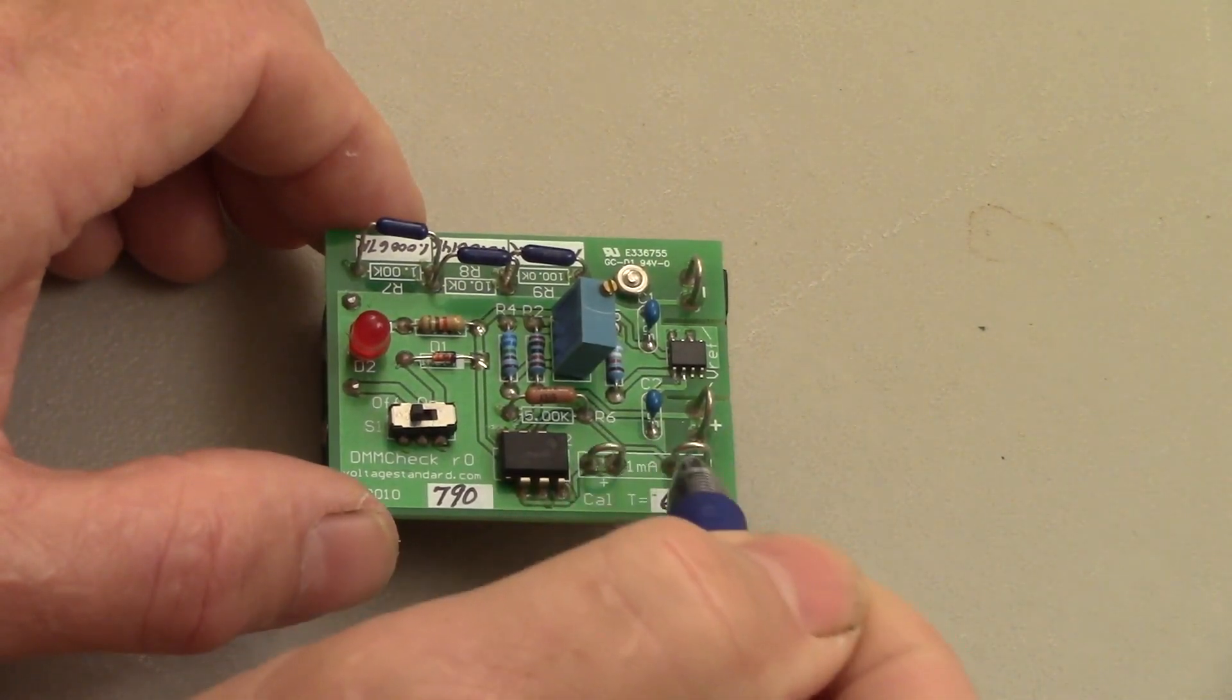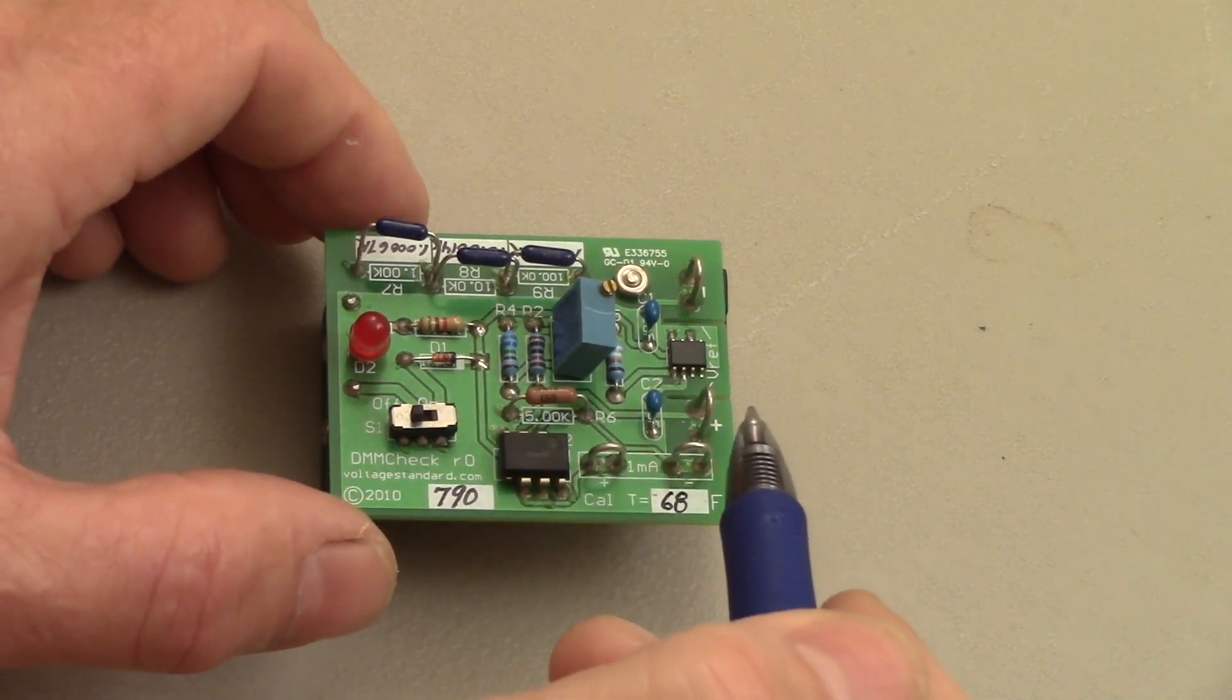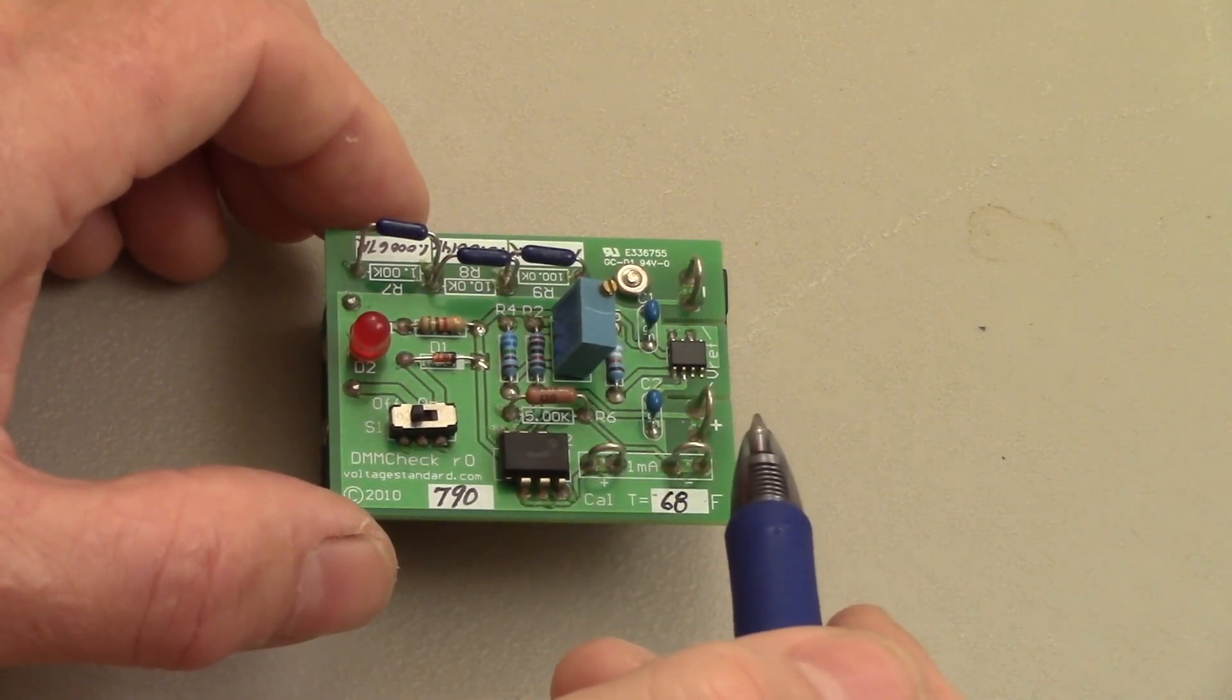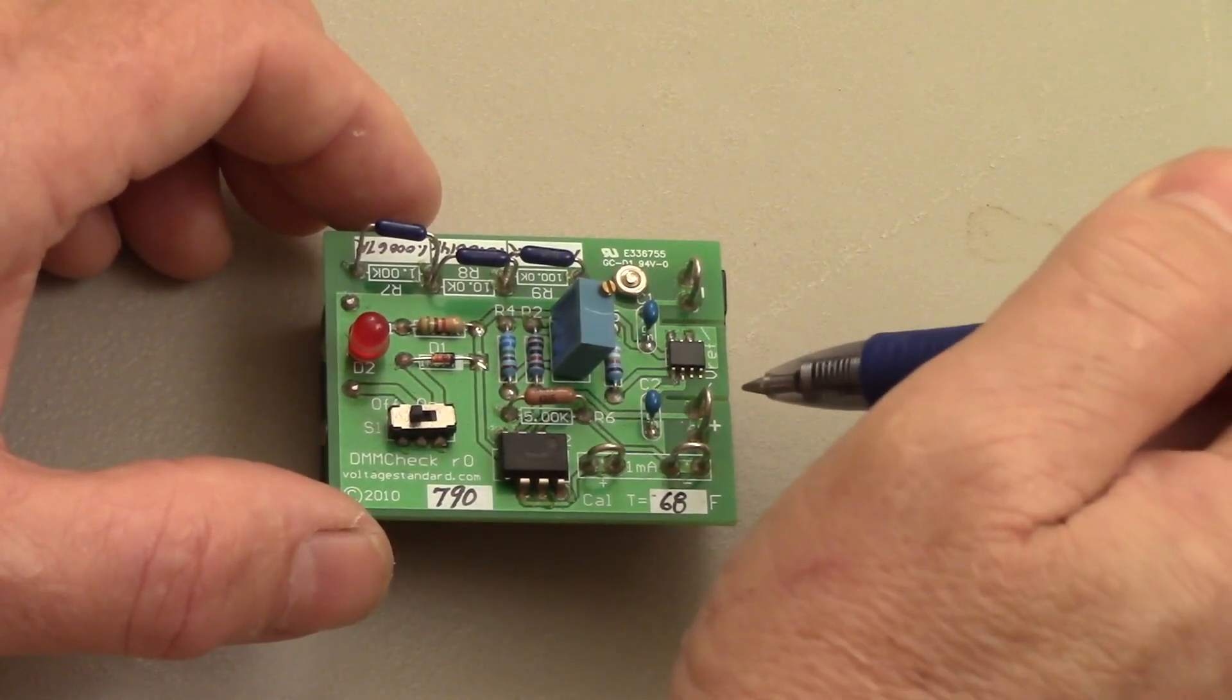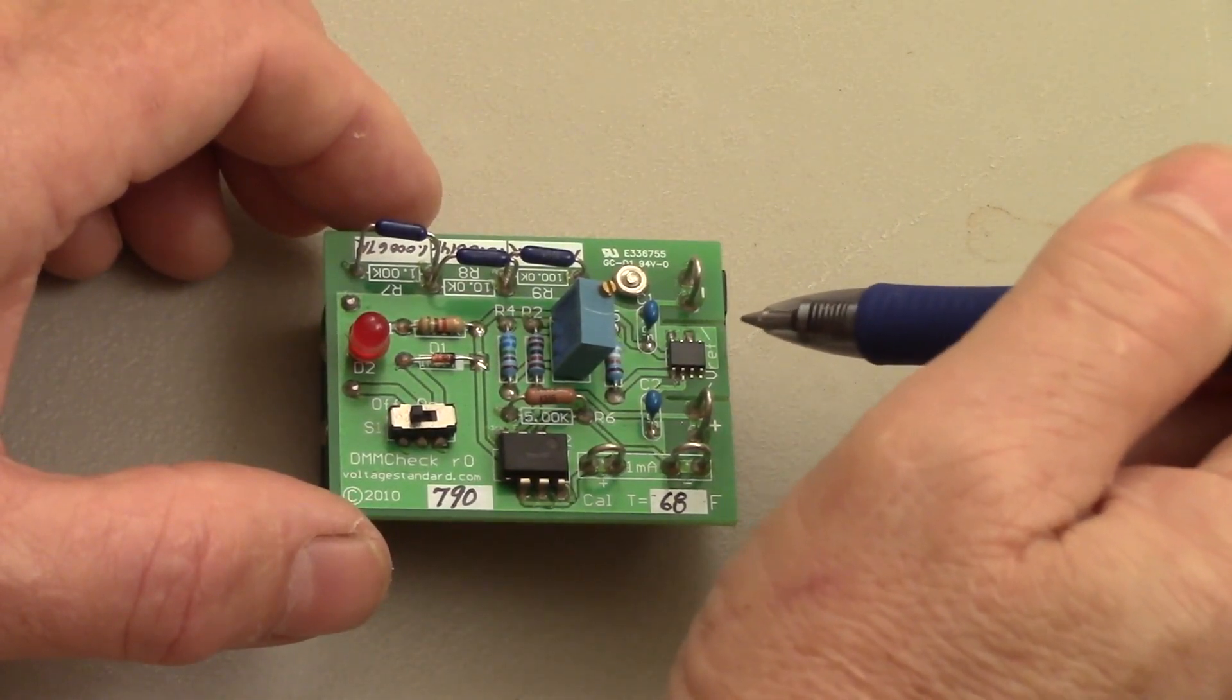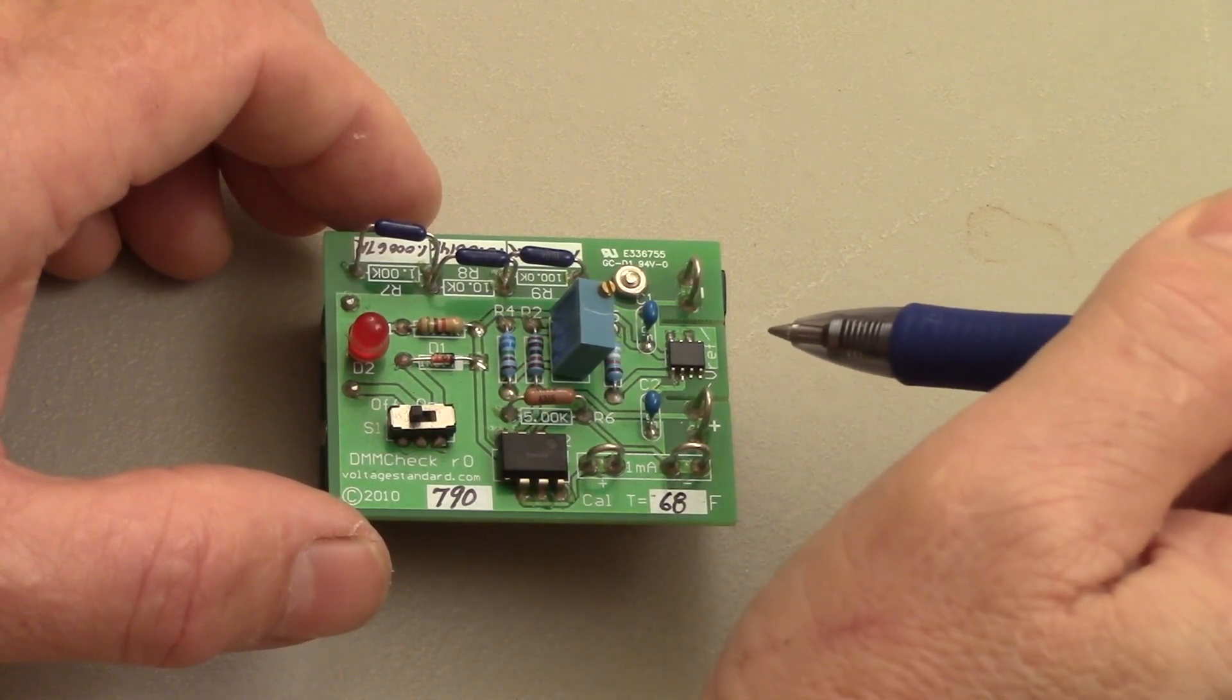A 1 milliamp current source, right here, is also accurate to 0.1%. I really like the design. Note that there are cut-outs around the voltage reference in order to relieve the stress on that device, so that it will remain accurate.